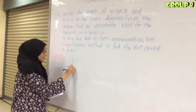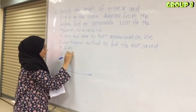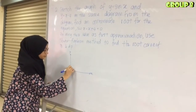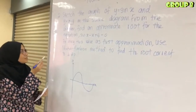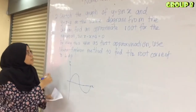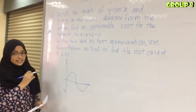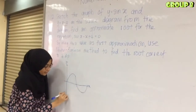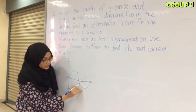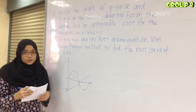First, sketch the x-axis and y-axis. For y = sin x, draw the sine curve. For the second equation y = x minus 4, plot the y-intercept at negative 4, then draw a straight line. We can see the intersection between the sine curve and the straight line.